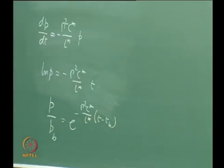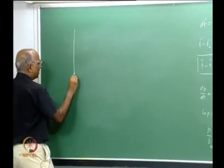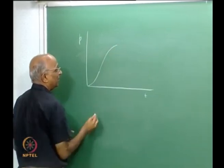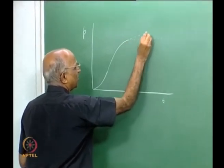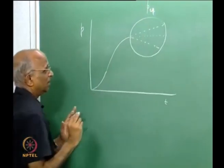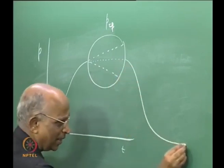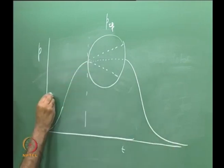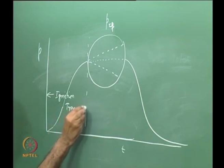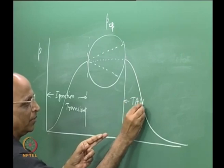Why do we do all this? Whenever a rocket motor ignites, the pressure changes with time: starts slowly, builds up during flame spread, then reaches equilibrium — if neutral burning it stays flat, if progressive it rises. This is the ignition transient. After all propellant is consumed, it decays back. There is a period of steady burning which is much longer, and finally a tail-off phase when the propellant burns out.